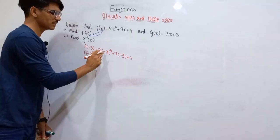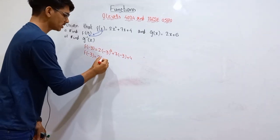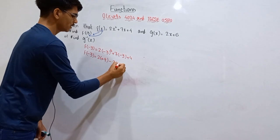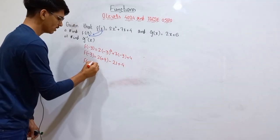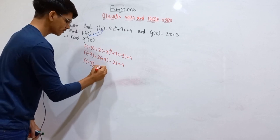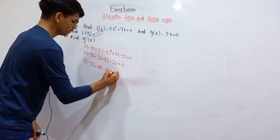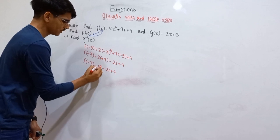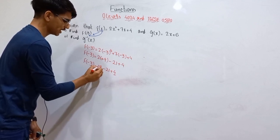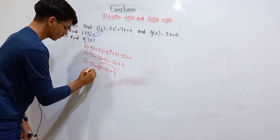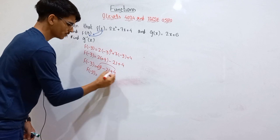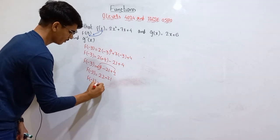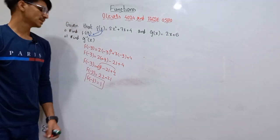So (-3)² is positive and the square of 3 is 9. Then 7 times 3 is 21, so we have 2(9) - 7(3) + 4, which gives 18 - 21 + 4. Applying the rule, add the positive values first: 18 + 4 = 22, then 22 - 21 = 1. So f(-3) = 1.